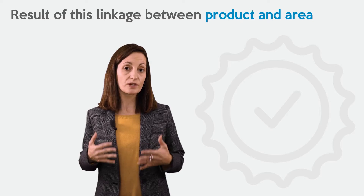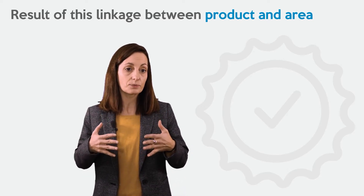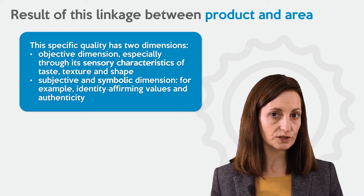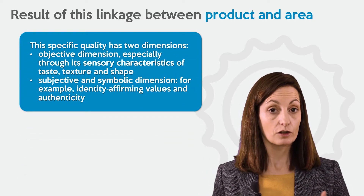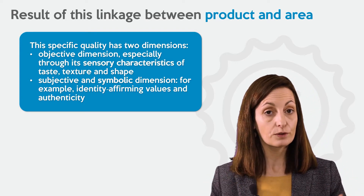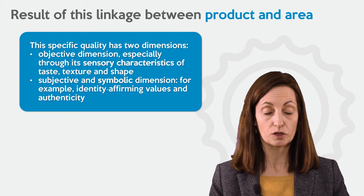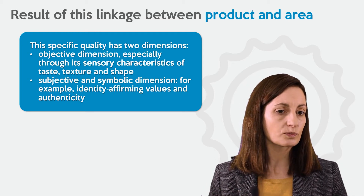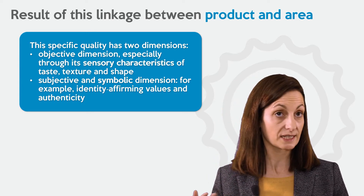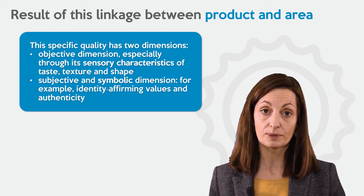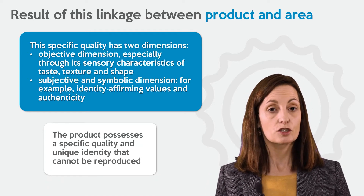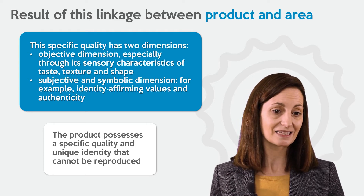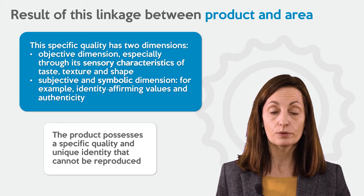Between local stakeholders and their environment, interactions have generated specific knowledge and developed a specific origin-linked quality for the product. As a consequence, there is a specific result of this linkage between the product and the geographical area. The specificity of the product has two dimensions: an objective dimension, especially through its sensory characteristics such as taste, texture, and shape; but also a subjective and symbolic dimension, for example, the identity-affirming value and authenticity. The product will thus possess a specific quality and unique identity that cannot be reproduced elsewhere.